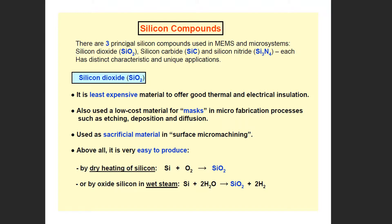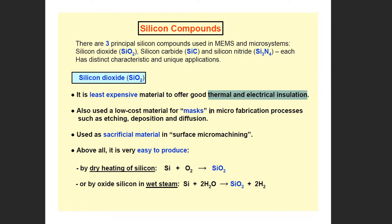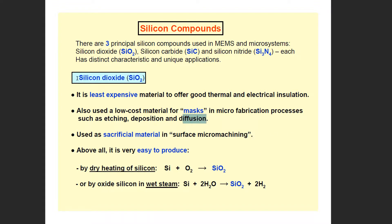Basically, there are three principal silicon compounds used in MEMS microfabrication: silicon dioxide, silicon carbide, and silicon nitride. Each has distinct characteristics and unique applications. Silicon dioxide is the least expensive material and offers good thermal and electrical insulation. Its main application is insulation, and it is also used as a mask in deposition and diffusion processes.